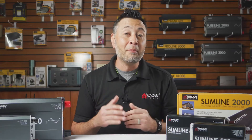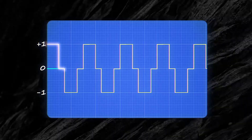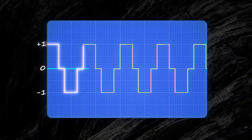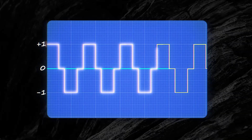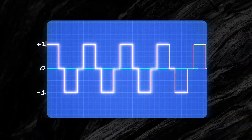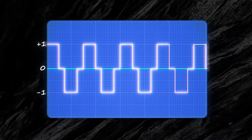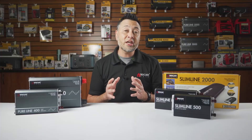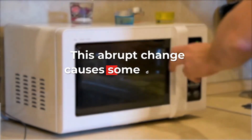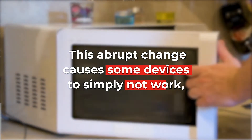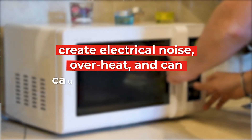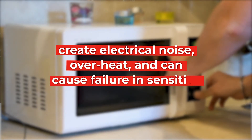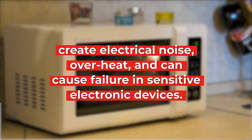On the other hand, modified sine wave, or MSW, is more like a light switch with abrupt voltage rises and falls — as seen in the waveform — with long periods of rest at zero volts. This abrupt change causes some devices to simply not work, create electrical noise, overheat, and can cause failure in sensitive electronic devices.